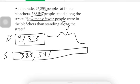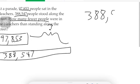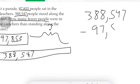Subtract! I think I heard subtract, and they're absolutely right. So we're going to subtract: three hundred eighty-eight thousand five hundred forty-seven — big number always on top — minus ninety-seven thousand eight hundred fifty-three. I'm going to go through with the color green here and regroup to make sure I can subtract.